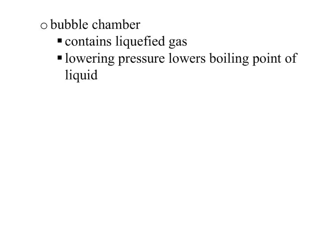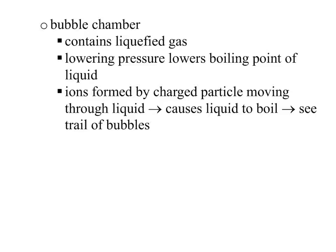Then we have something called a bubble chamber, which is basically the opposite. A bubble chamber contains liquefied gas, and lowering the pressure in the chamber lowers the boiling point of the liquid — which is really important. A radioactive source emits beta particles, alpha particles, or gamma rays moving through that liquefied gas. Since the boiling point is low, the ions form, they ionize, and it causes the liquid to boil, so we see a trail of bubbles — which is why it's called a bubble chamber. In a bubble chamber we're turning liquid into vapor, whereas in a cloud chamber we're turning vapor into liquid.